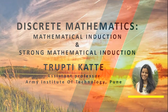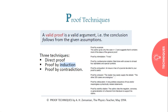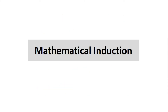In this video, we can learn about mathematical induction and strong mathematical induction. A valid proof is a valid argument — the conclusion follows from the given assumption. There are three proof techniques available: direct proof, proof by induction, and proof by contradiction. In the direct proof technique, we just write all the values present for the given equation, sum them up, and conclude.